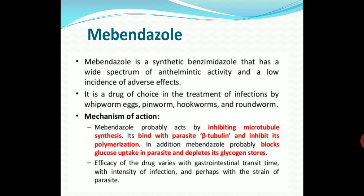Coming to the mechanism of action, mebendazole generally inhibits microtubule synthesis. The drug binds with parasitic beta-tubulin, a component present in microtubules, and inhibits its further polymerization. In addition, mebendazole probably blocks glucose uptake in parasites and depletes their glycogen stores. Efficacy of the drug varies with gastrointestinal transit time, intensity of infection, and perhaps with the strain of parasite.